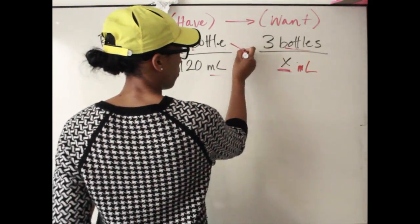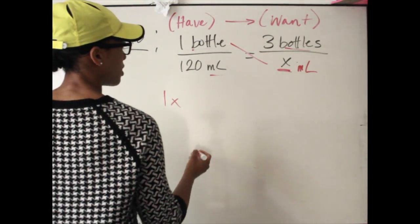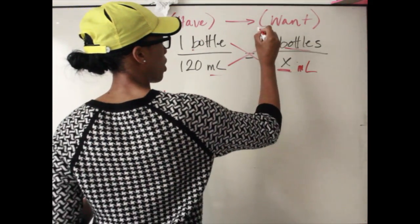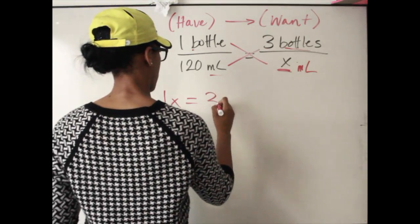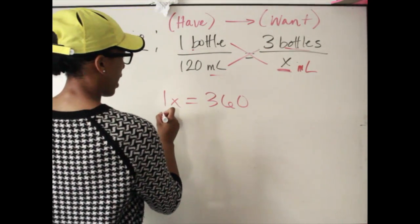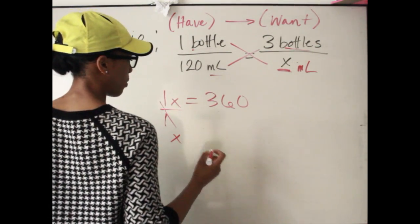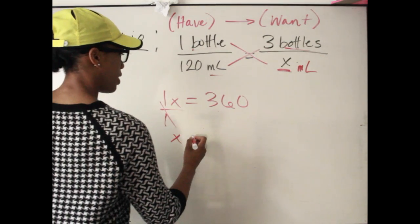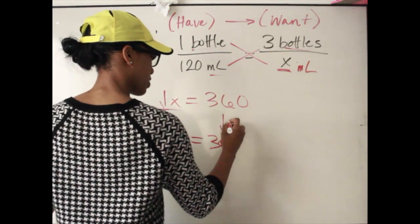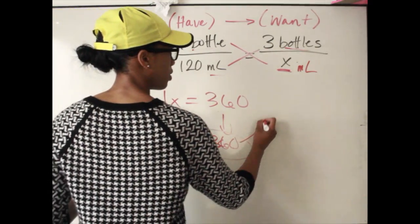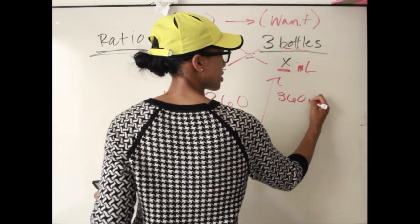Cross multiplying gives us 1 times x equals 120 times 3, which is 360. We cancel out the 1, isolating x, and x equals 360. So the answer is 360 mL.